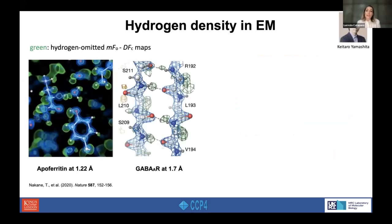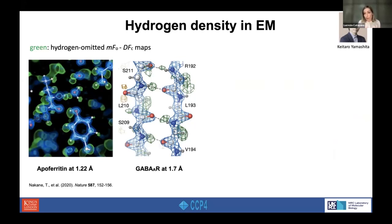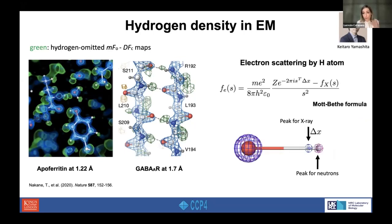In 2020, single-particle cryo-EM achieved atomic resolution. Nakane and colleagues determined the structure of apoferritin at 1.22 Ångström, and also the structure of the GABA receptor at 1.7 Ångström. One of the most interesting things is that we can see certain hydrogen peaks even at 1.7 Ångström of resolution. So how can we visualize hydrogen atoms in cryo-EM and electron diffraction experiments?